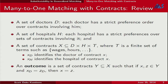An outcome is a set of contracts that names only one contract for each doctor. So we're limiting ourselves to worlds in which doctors can only take a single contract. I'm deviating slightly from Paul's language — he used the term allocation, but we'll use outcome because we'll eventually distinguish between outcomes in contract space and allocations in competitive equilibrium space.